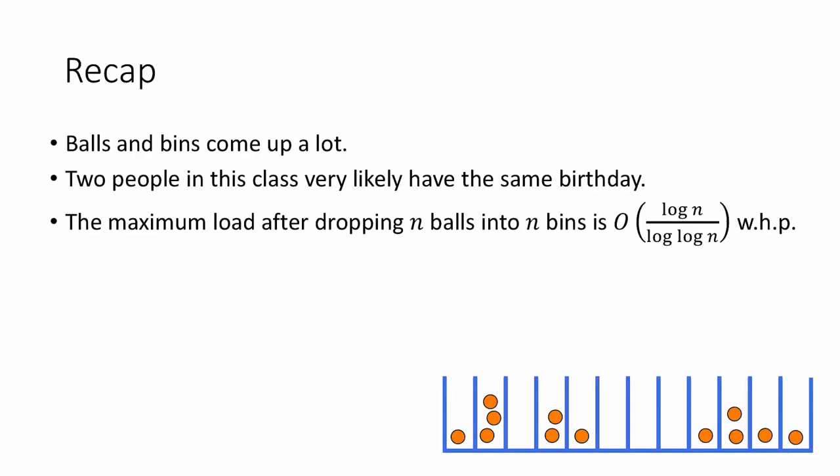To recap: (1) Balls and bins come up a lot. (2) Two people in a group of 23 are very likely to share a birthday. And (3) the maximum load after dropping n balls into n bins is O(log n / log log n) with high probability. In the next video, we'll discuss the Poisson distribution and a technique called Poissonization, which shows that this bound of log n / log log n is in fact tight. See you there!